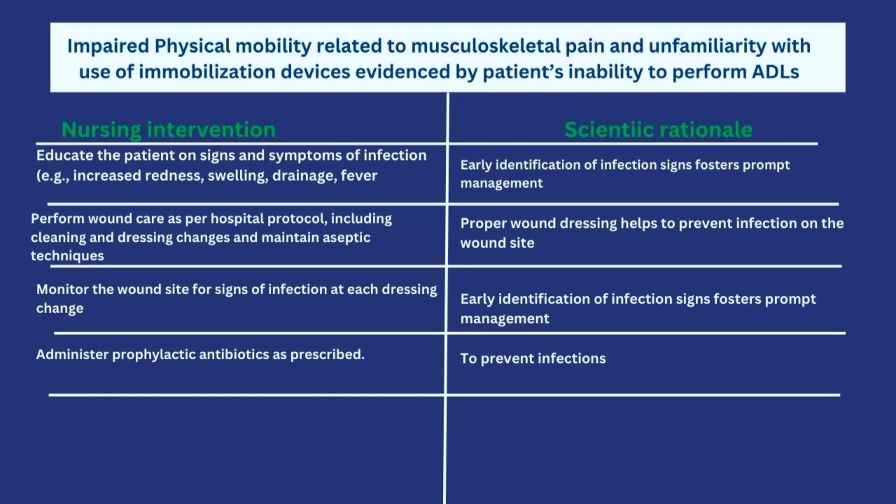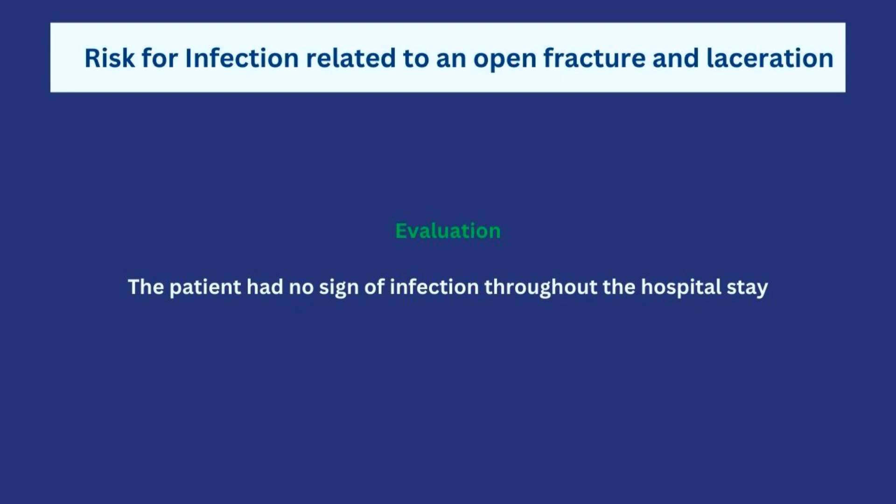For the evaluation of this diagnosis, as always it must fall within the objective's time frame. Our evaluation states: the patient had no sign of infection throughout the hospital stay. And there you have it — three examples of nursing diagnoses you can work on for a patient with a fracture. If you want to see more videos on nursing care plans for other conditions, click on the playlist here, and I'll see you in the next video.